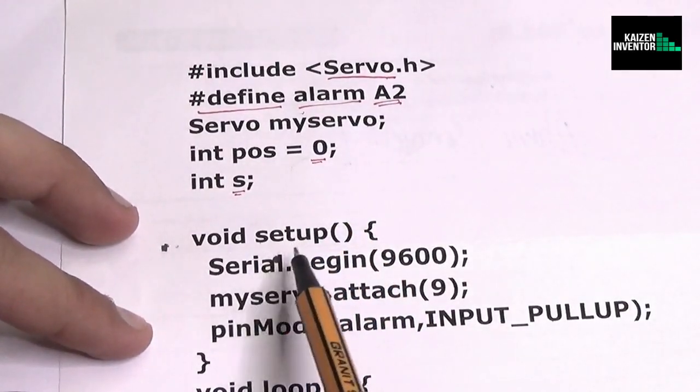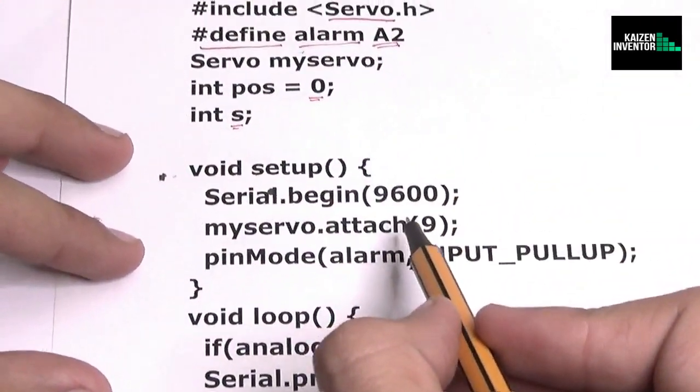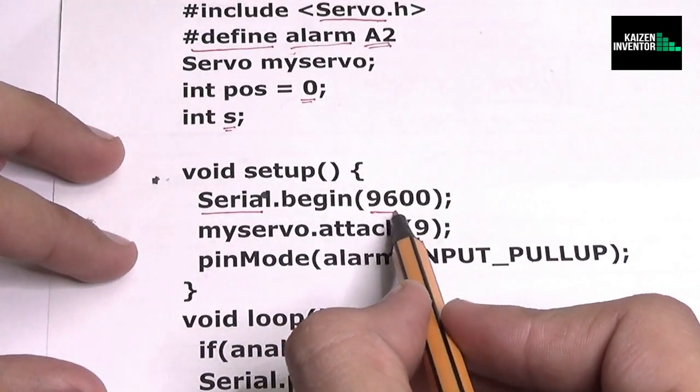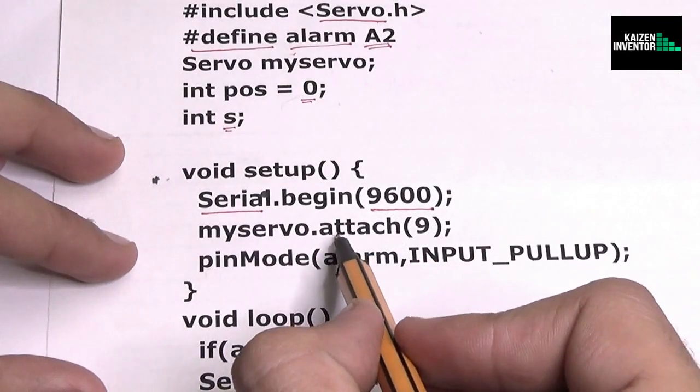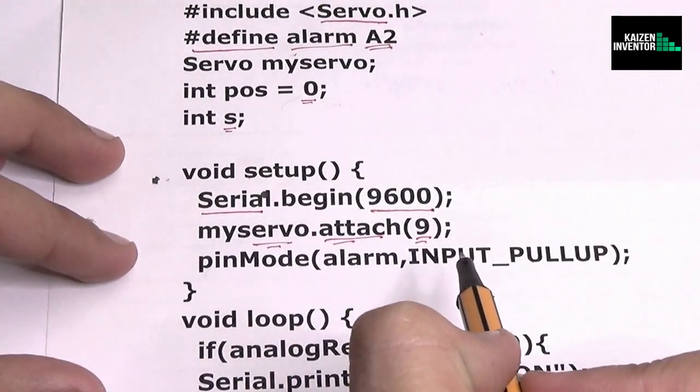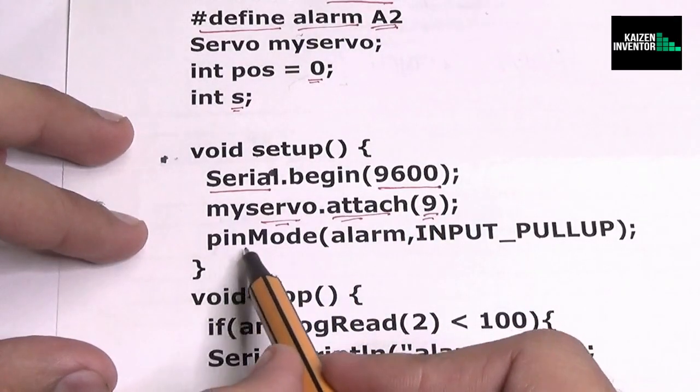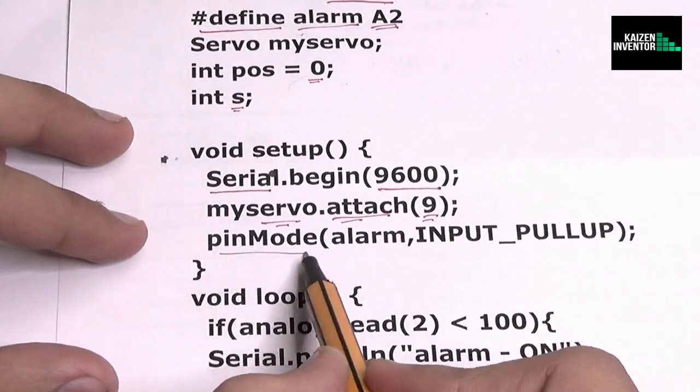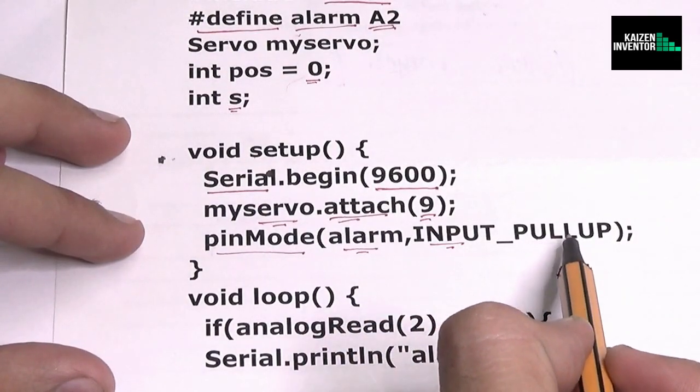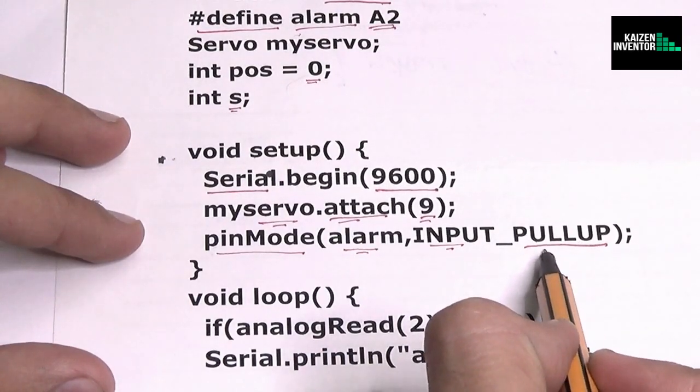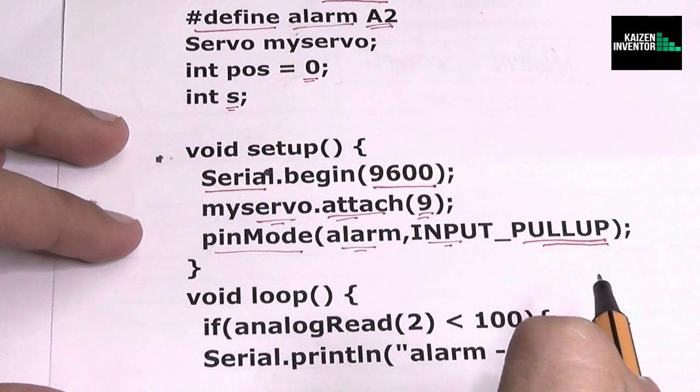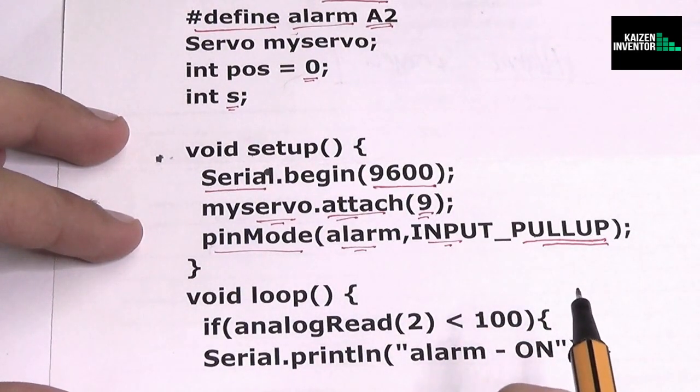So now let's jump to the void setup. So we set up the serial monitor at 9600 baud rate and we define our attach of the servo to pin number 9 of the Arduino. Now again we clarify the pin mode that the alarm is an input device and we also regulate the pull-up resistor with the alarm analog pin, so that we do not get any random value and get an accurate value of the alarm.